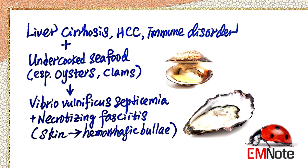Vibrio vulnificus infections: Severe Vibrio vulnificus infections can be caused by eating raw or undercooked seafood, especially oysters, mussels, clams, and scallops. Vibrio vulnificus can cause life-threatening necrotizing fasciitis that frequently calls for intensive care or fasciotomy. Mortality can be as high as 20% and often occurs in just a day or two.